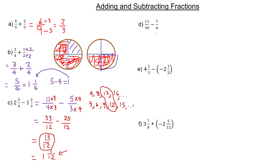Fourth example here: 11 thirtieths minus 7 sixths. 30 and 6 are the two denominators. I want to find the least common multiple. If I start writing multiples of 6 — counting by 6 — it's 6, 12, 18, 24, 30.